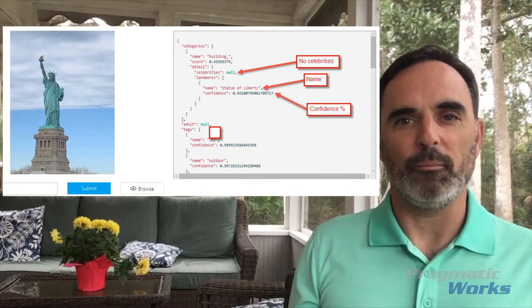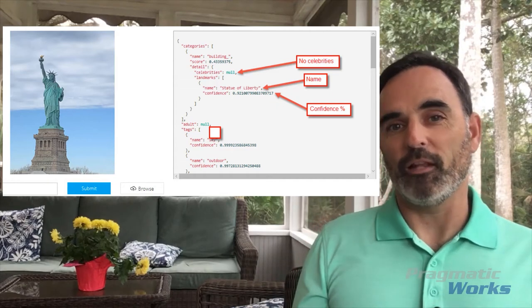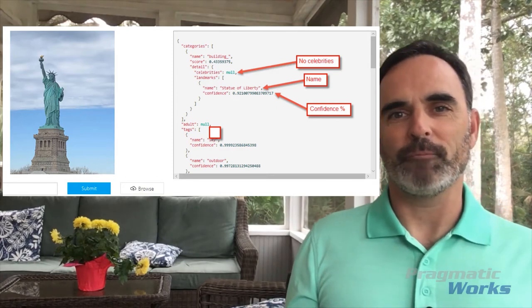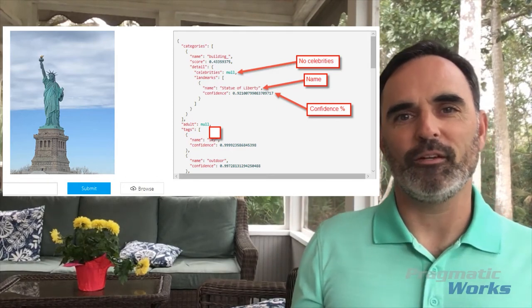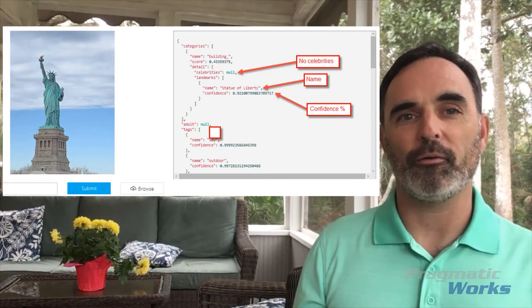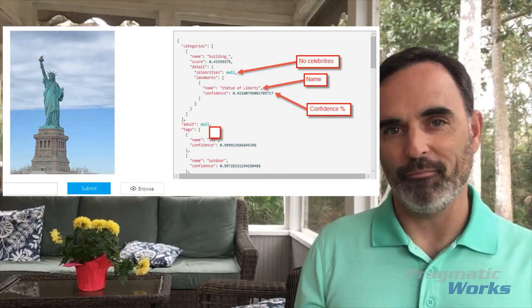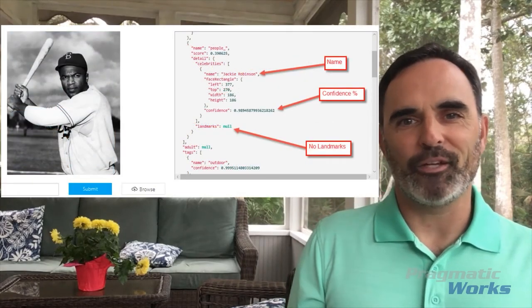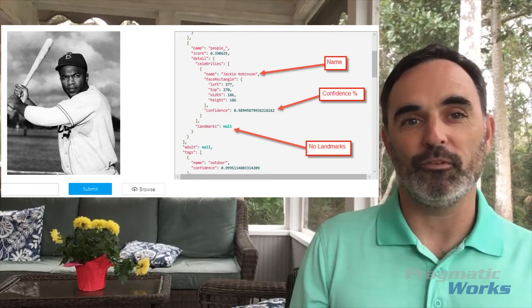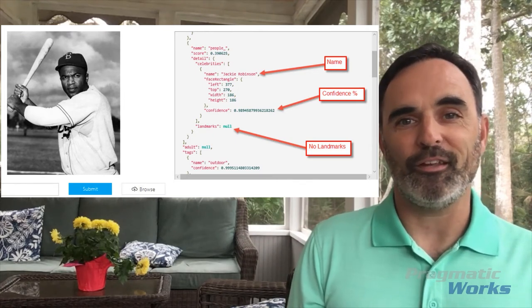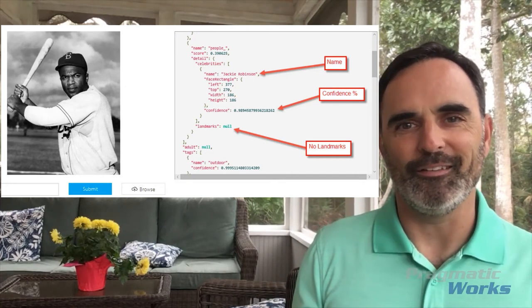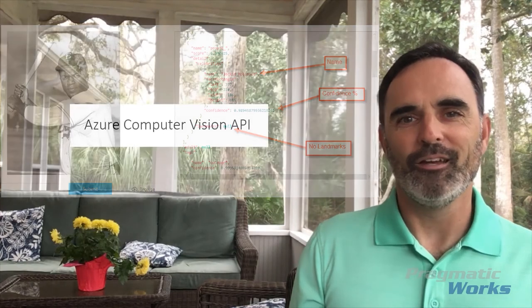It correctly identified it as the Statue of Liberty. This API is also the same one that tells you whether there are celebrities and who they are — it correctly identified that there are no celebrities in this picture. It also gives you a confidence percentage indicating how confident the API is that it made a correct match. One more example: I uploaded a picture of a famous person and the API correctly determined it was Jackie Robinson with a very high percentage of confidence, and it also correctly understood there were no landmarks in the image.